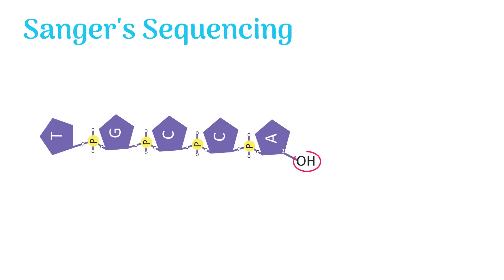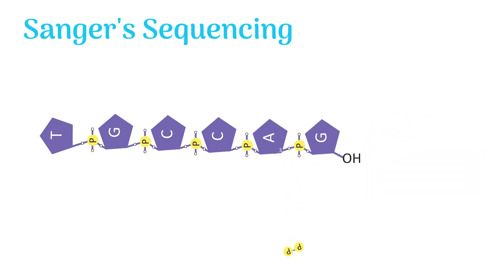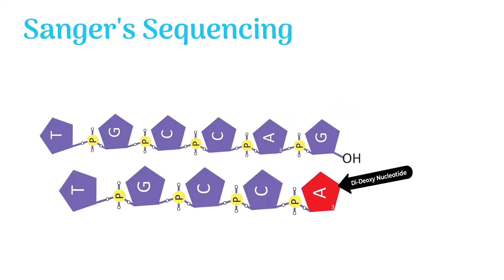Remember, the OH group at three prime carbon is crucial in DNA polymerization. Because the new nucleotide is added to this three prime OH group in strand elongation, but dideoxynucleotide lacks this three prime OH group which helps in the attaching of new nucleotides.